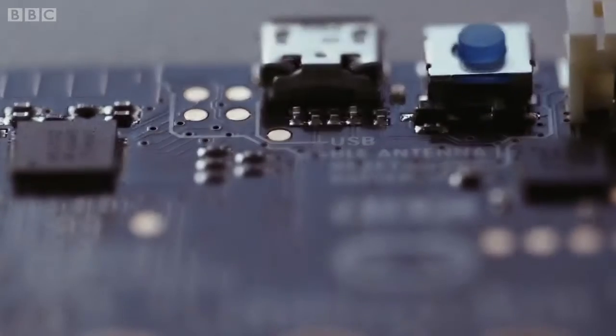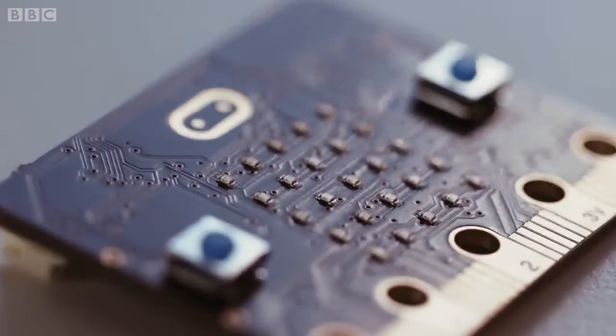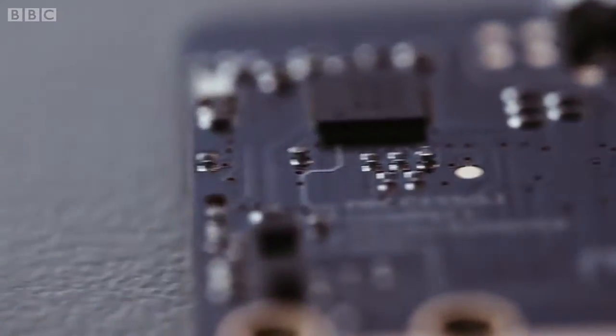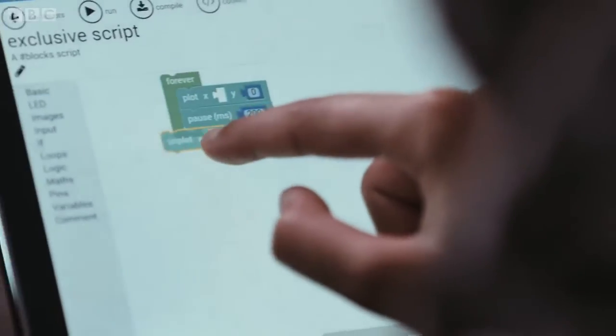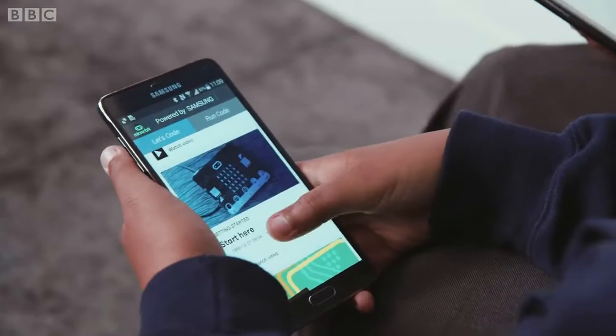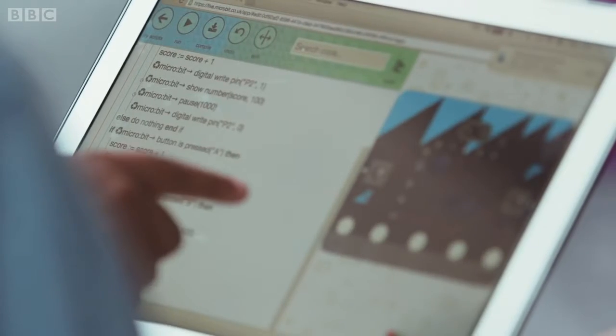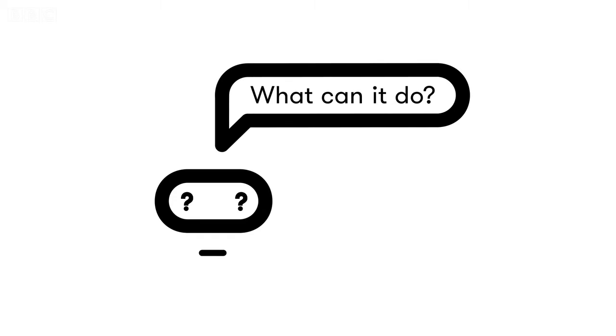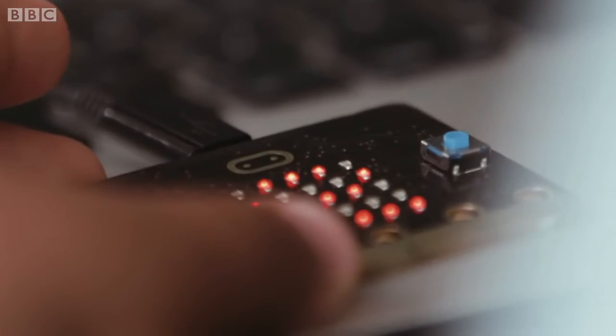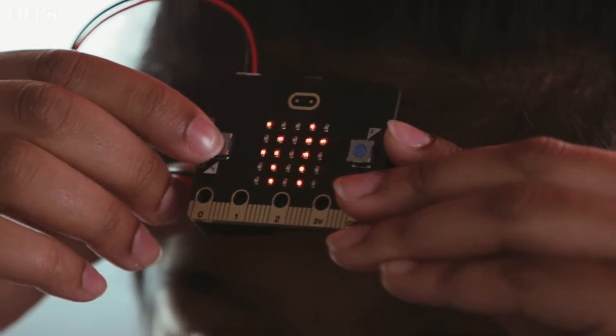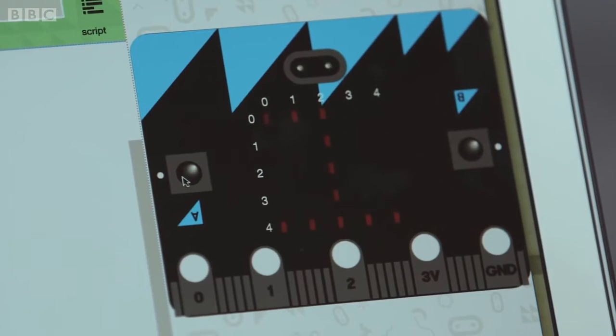The microbit is a pocket-sized computer that lets you get creative with digital technology. You can code, customise and control your microbit from anywhere. Light up the LED display to create something simple in minutes, or even communicate between microbits.